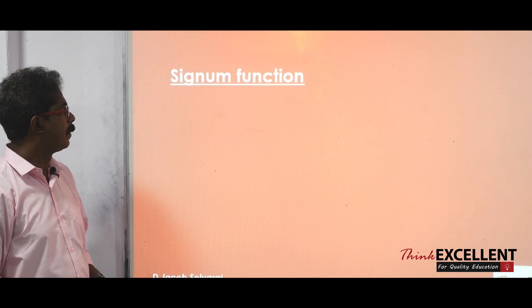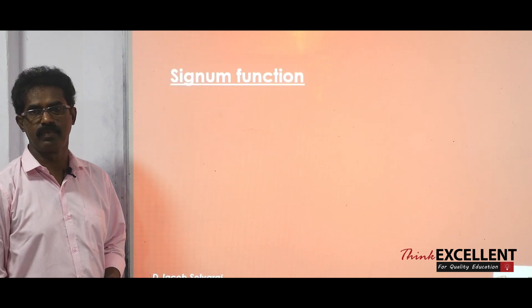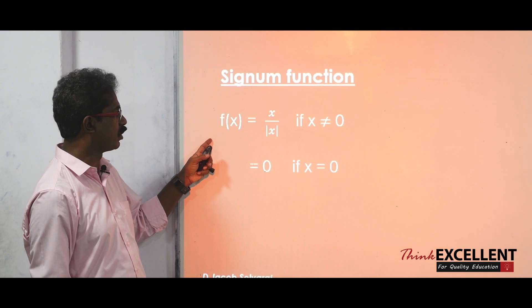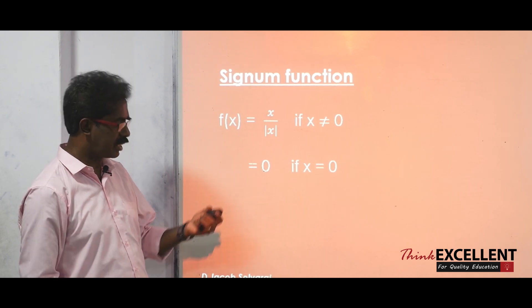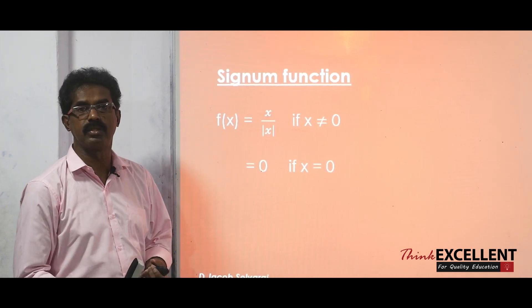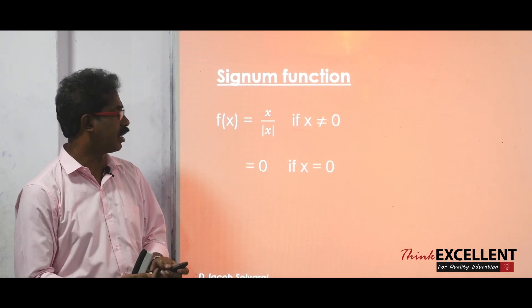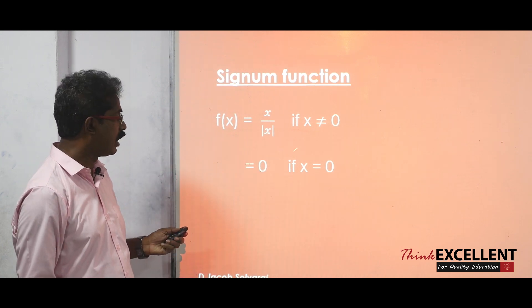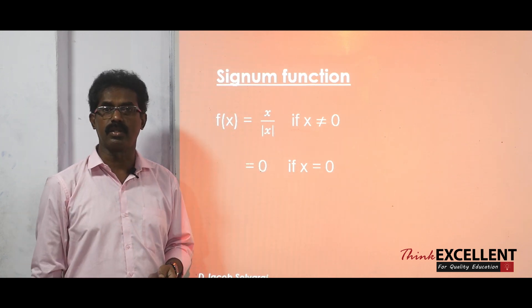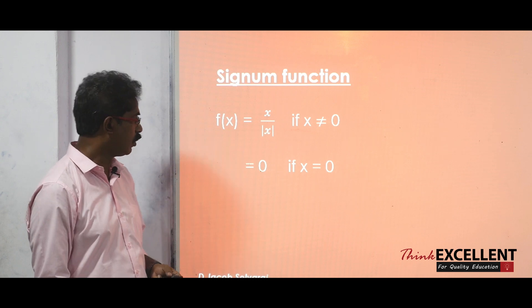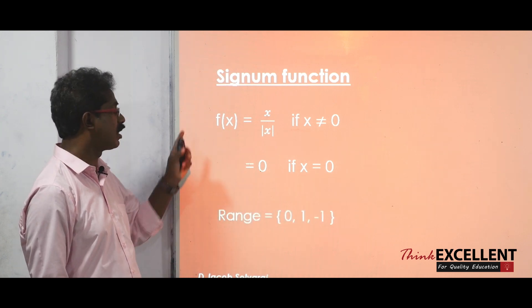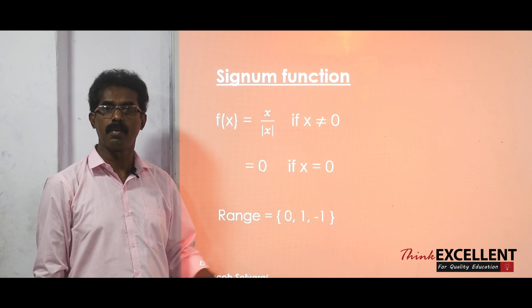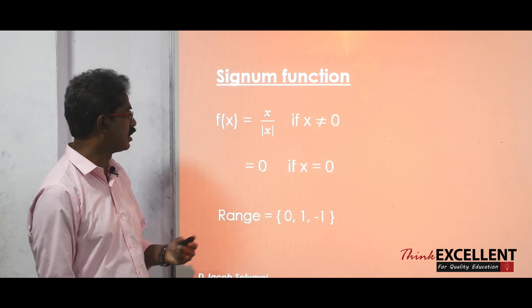Then we have the signum function. f(x) = x / |x| when x ≠ 0, and f(x) = 0 when x = 0. Remember, the range for the signum function is {0, 1, −1}.